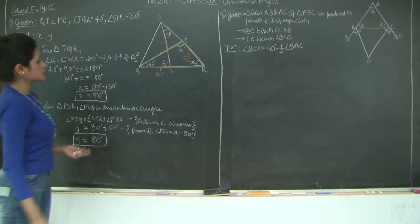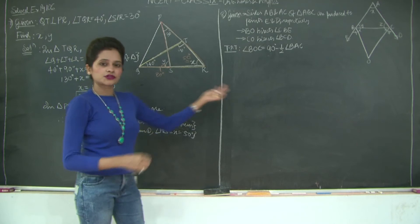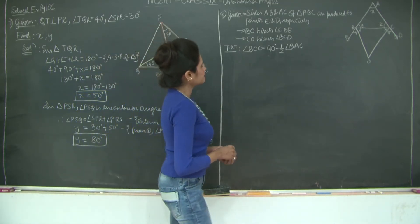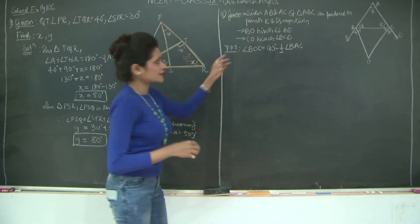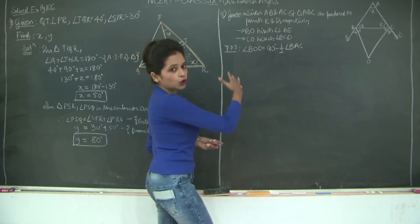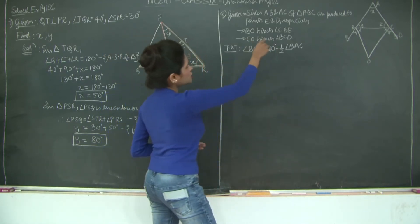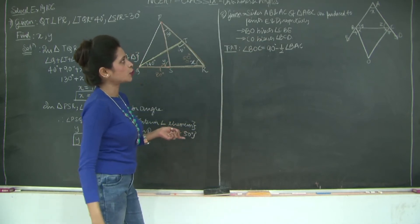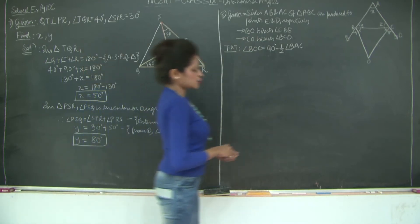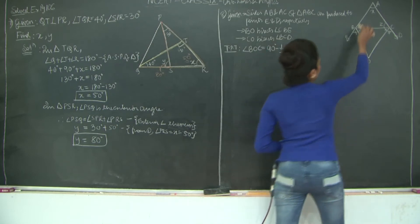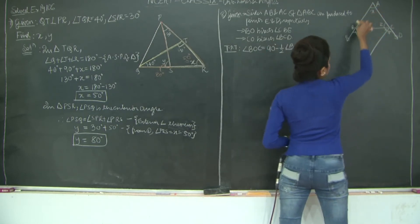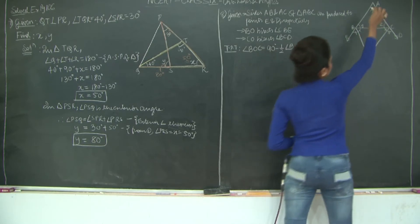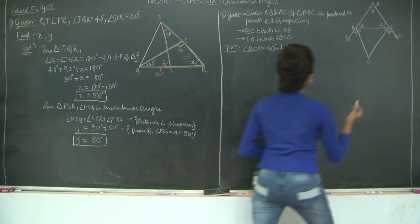That was solved example 1. Let's proceed with solved example 2. We have sides AB and AC of triangle ABC produced to points E and D respectively, so triangle ABC has side AB extended to point E and side AC extended to point D.